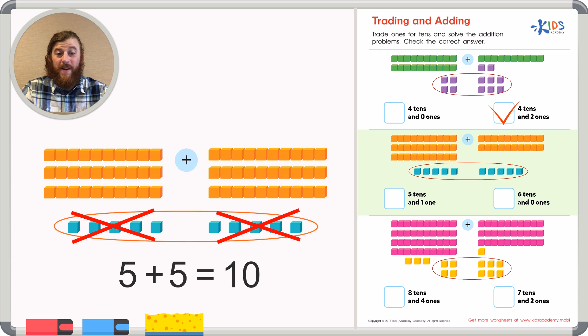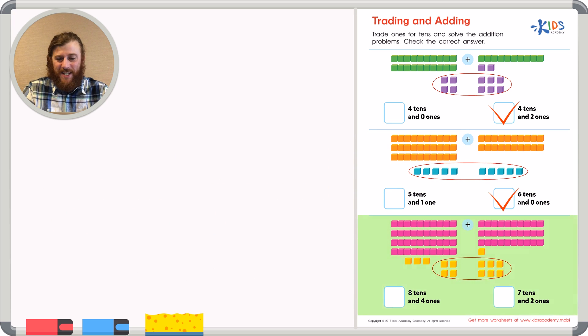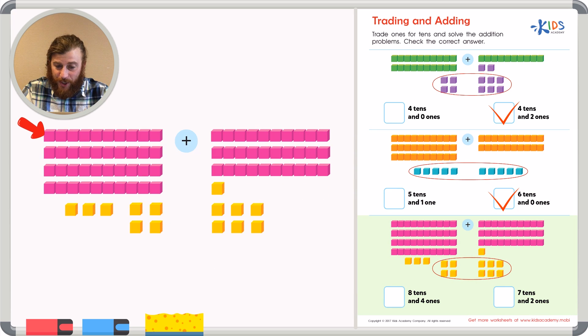Our last example has us adding one, two, three, four tens and seven ones. Let's see if we can combine these ones or these cubes to make a ten.